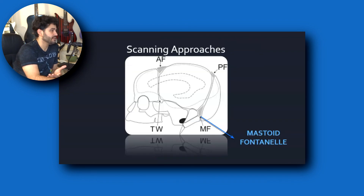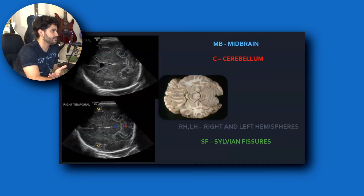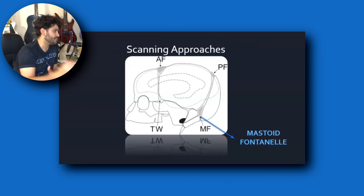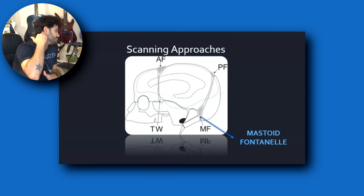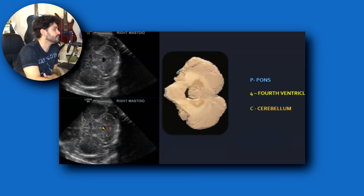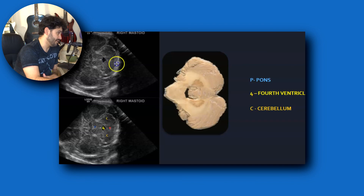Lastly, there's the mastoid fontanelle, posterior to the ear in the mastoid region. From there you can get a view primarily of the cerebellum. In bigger babies you'll see more of the brain, including where the circle of Willis is, the midbrain, cerebellum, and the fourth ventricle with the cerebellum and vermis. And that's pretty much the whole protocol.